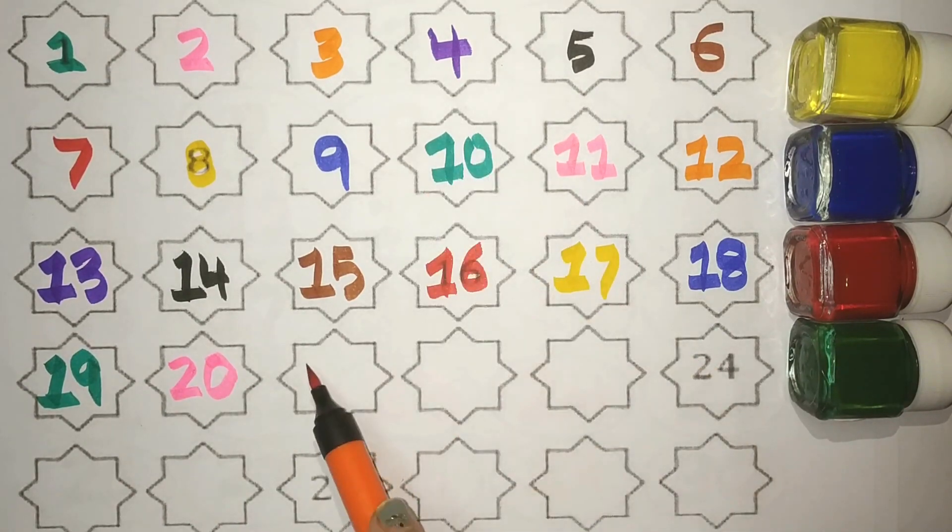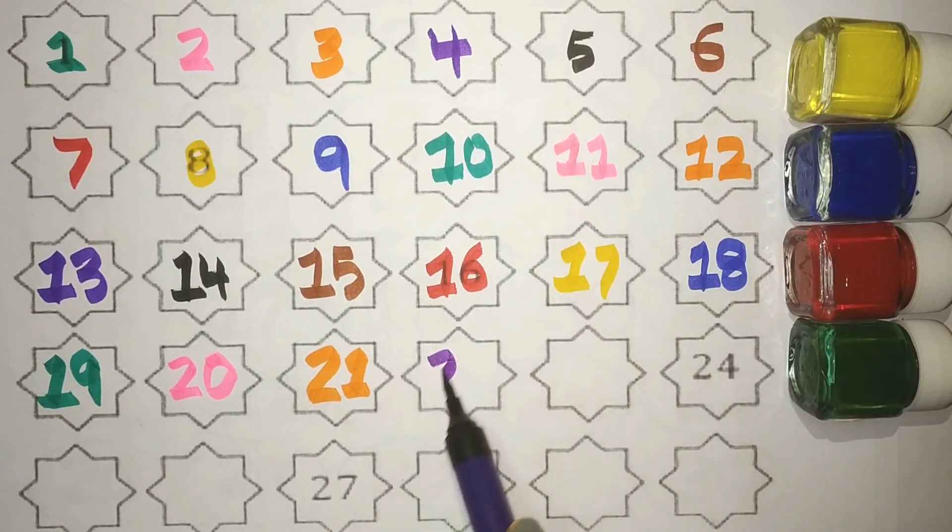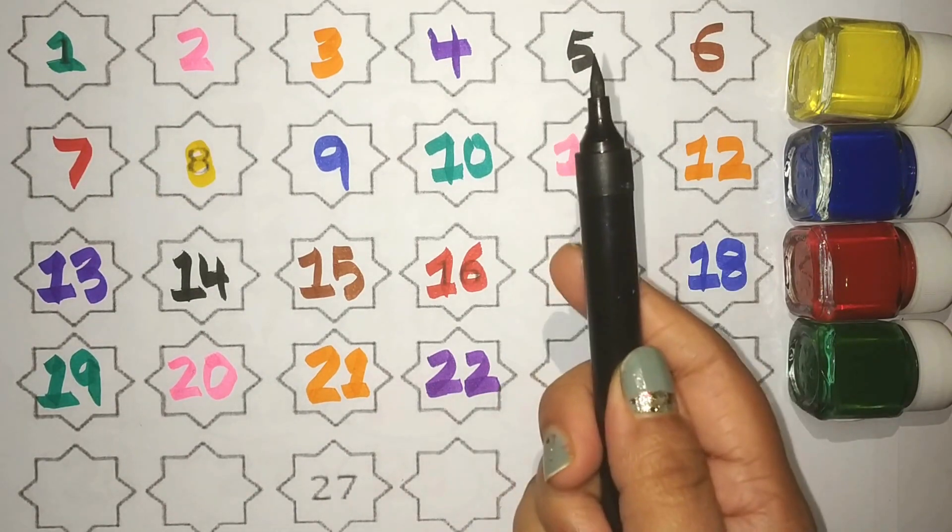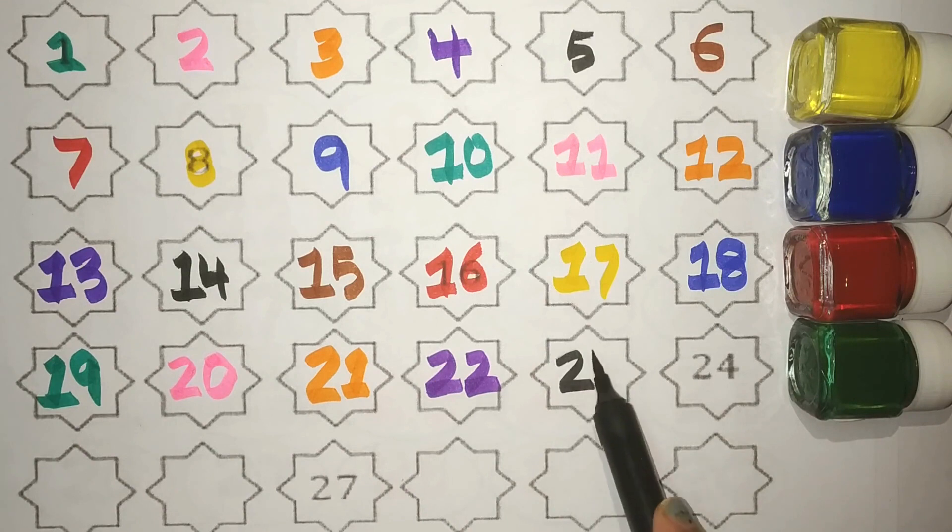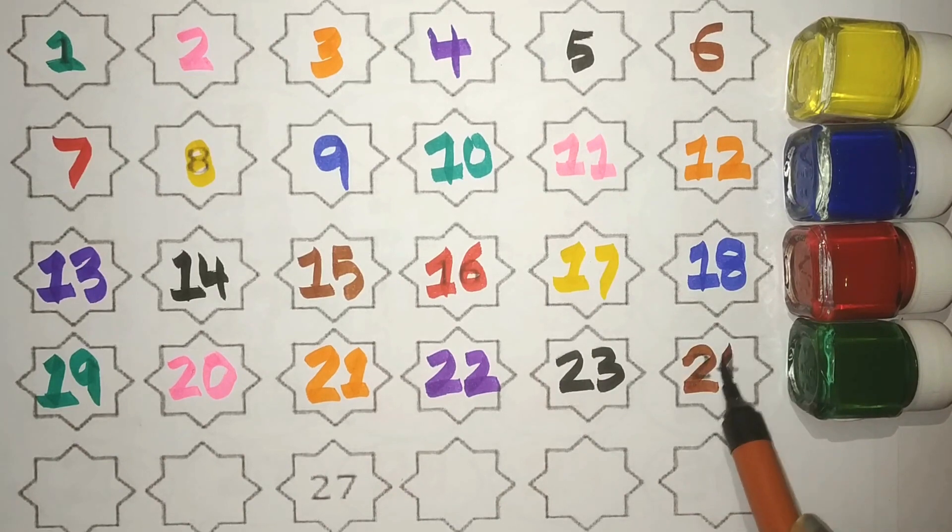Orange 2, 1, 21, Purple 2, 2, 22, Black 2, 3, 23, Brown 2, 4, 24.